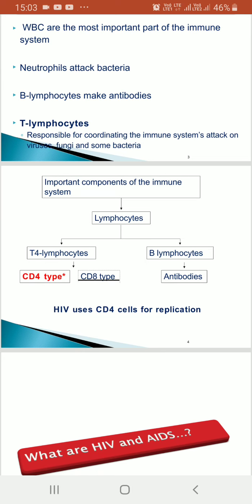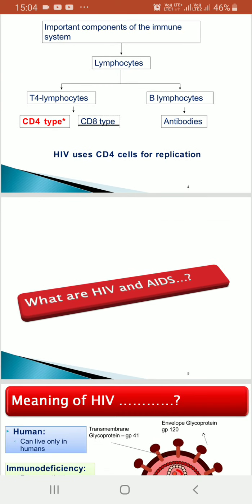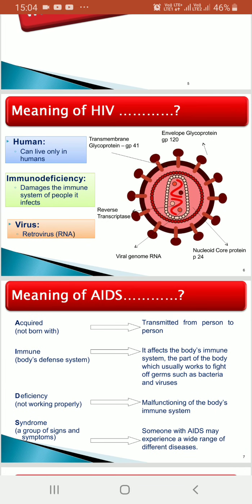Important components of our immune system are lymphocytes — B lymphocytes and T lymphocytes. B lymphocytes make antibodies. T lymphocytes are further of two types: CD4 type and CD8 type cells. The HIV virus uses CD4 cells for replication.